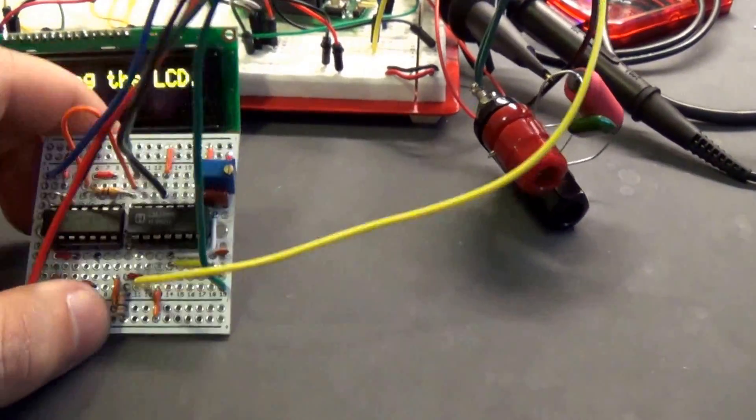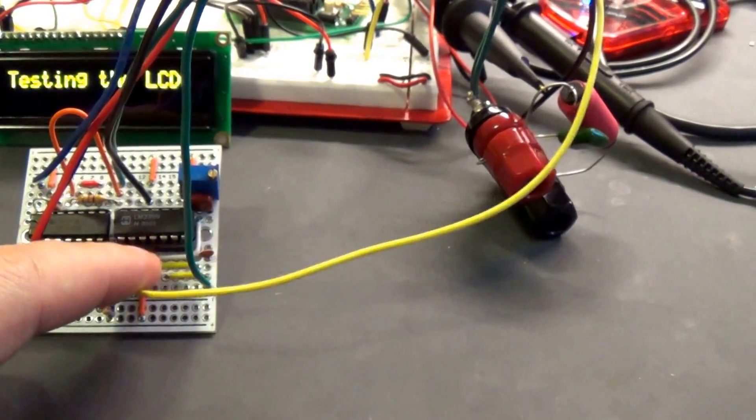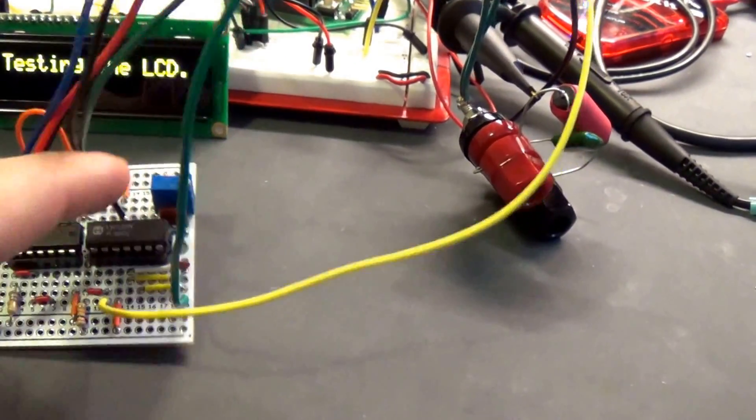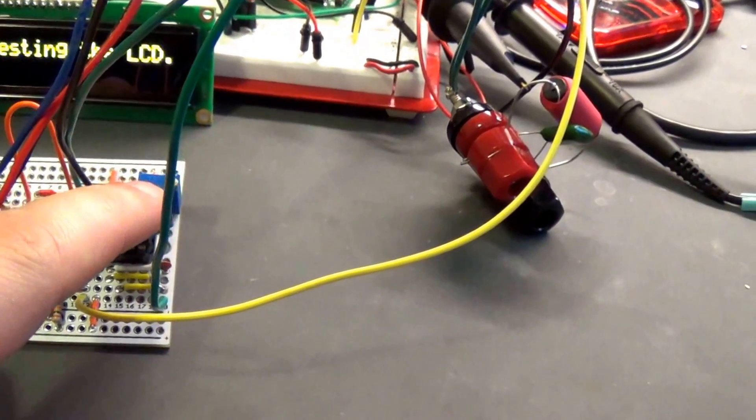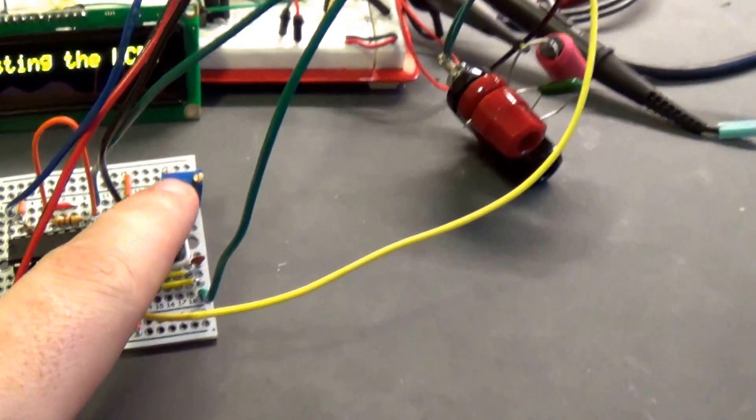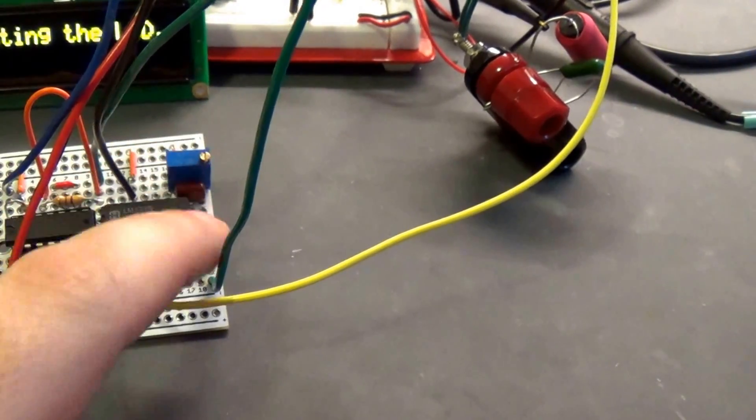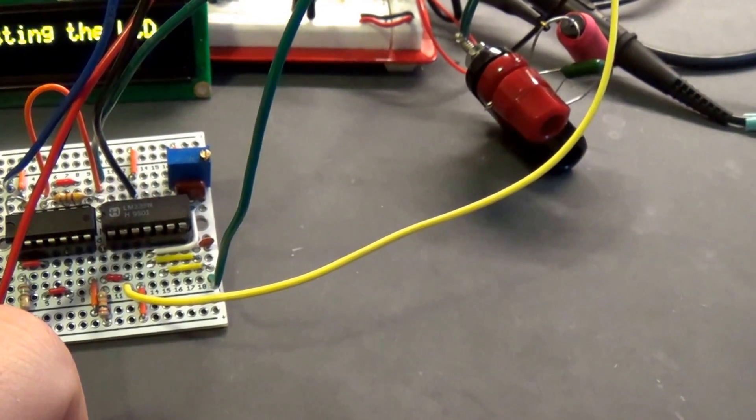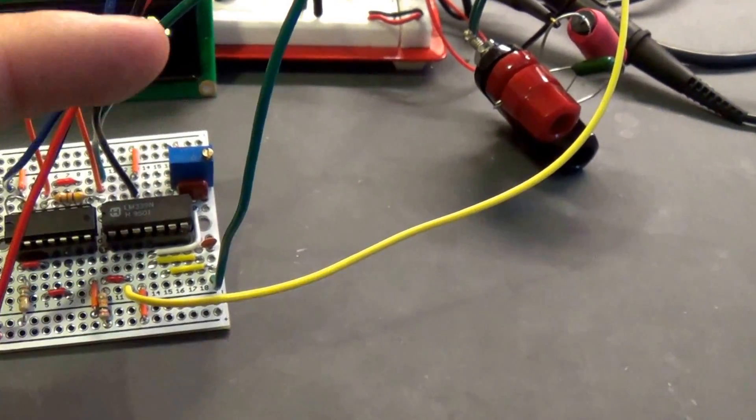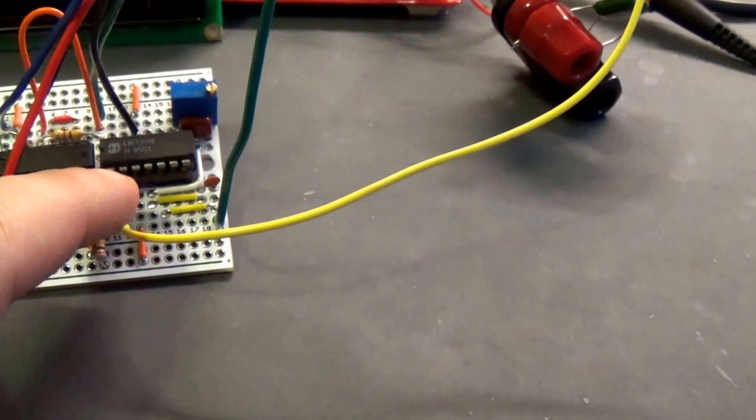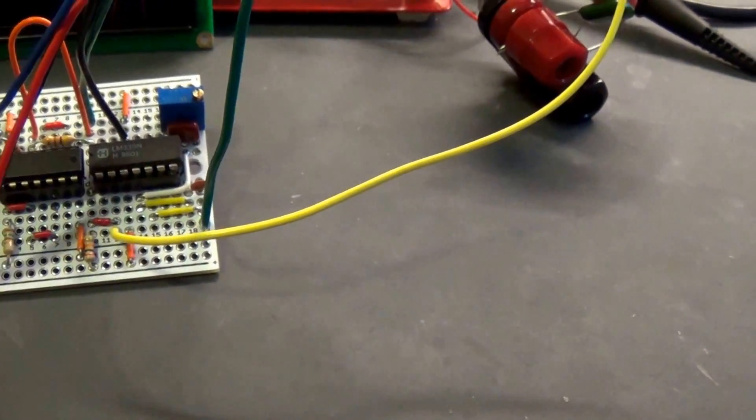Now the comparator just outputs based on two inputs. It's comparing, it's what it's doing. So I have a trimmer potentiometer here that's being used as a voltage divider. That's feeding into my negative input of my comparator, and then the output from the tank circuit is feeding into the positive.